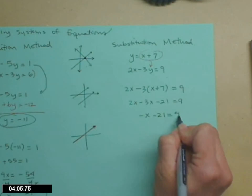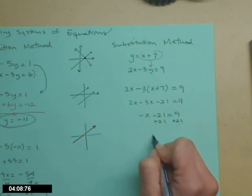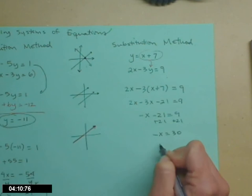minus 21 equals 9. Add 21 to both sides. Negative x equals 30, which means that x equals negative 30.